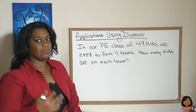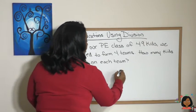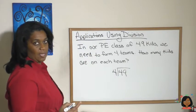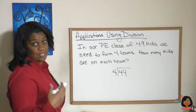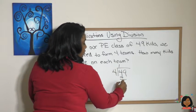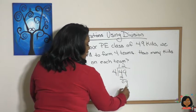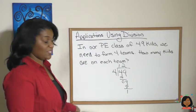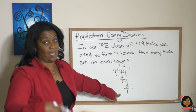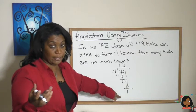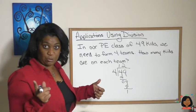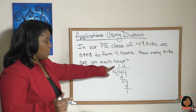Let's do our division problem — 49 kids divided into four teams will tell us how many students are on each team. Four goes into four one time, four goes into nine two times, but we've got one left over. This one represents an actual kid — we just can't toss that away. We can't call it a fraction or a decimal.